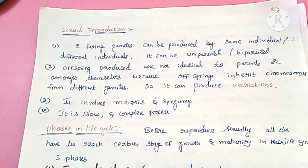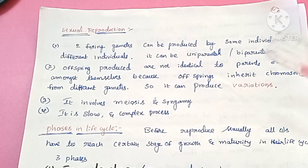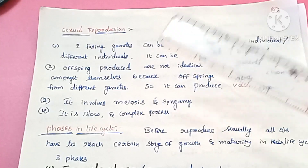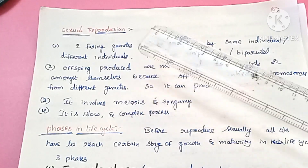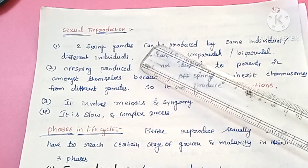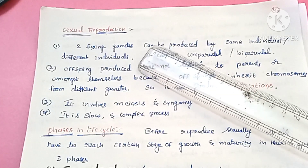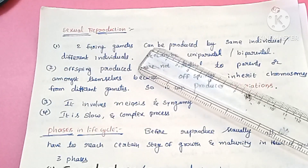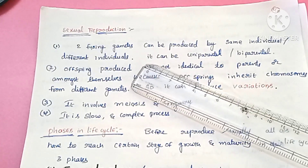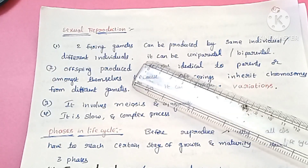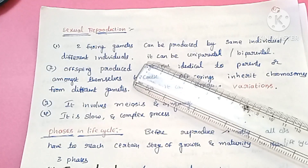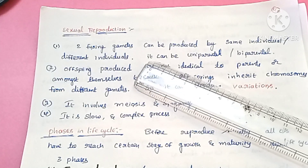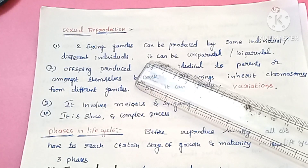Hello everyone, this is Lata Akula. In this video we are going to study about the next topic in reproduction in plants, that is sexual reproduction. We have already completed asexual reproduction and vegetative propagation. Now we will see what is meant by sexual reproduction — that is, a fusion of gametes occurs in sexual reproduction.